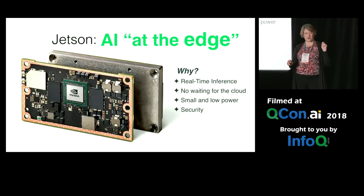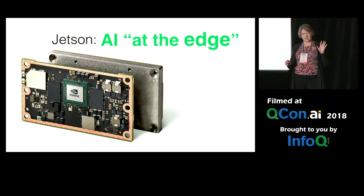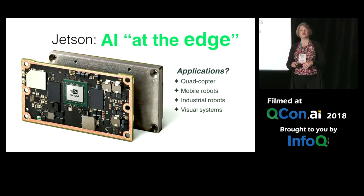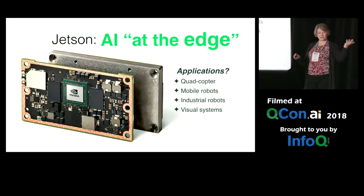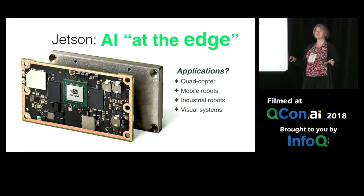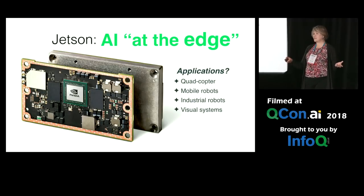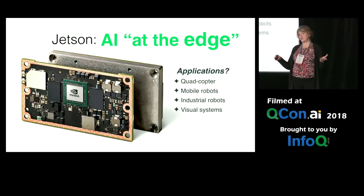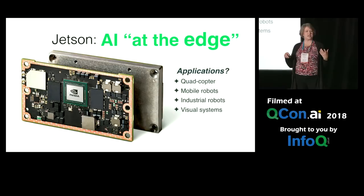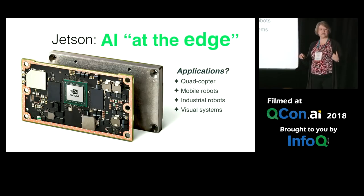This is what AI at the edge comes to. The kinds of applications you might use include a quadcopter — it's lightweight and you can do inference as it flies around. Mobile robots looking to determine where they are in the world. Industrial robots also. And visual systems such as smart cities or security cameras that are looking for certain people — some kind of inference that uses a visual input.